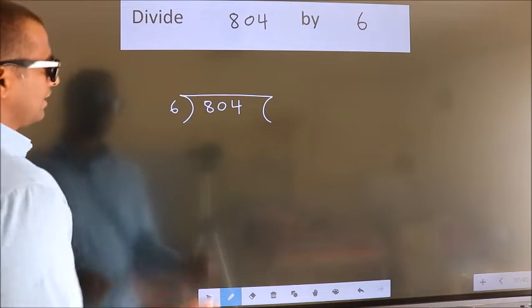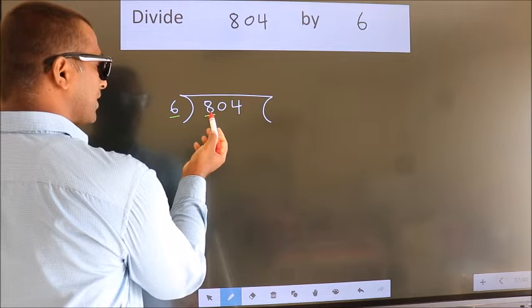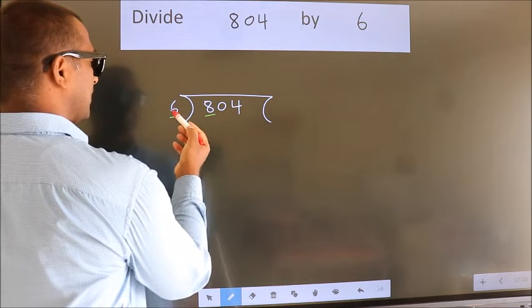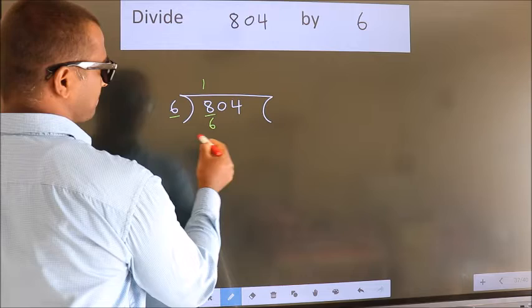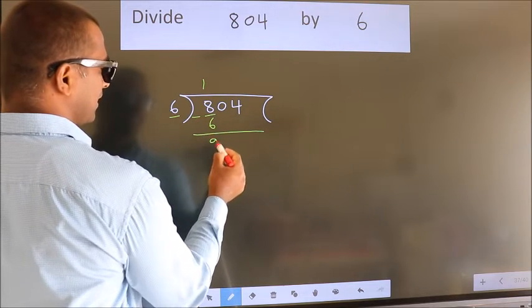Next. Here we have 8, here 6. A number close to 8 in 6 table is 6 times 1 is 6. Now we should subtract. We get 2.